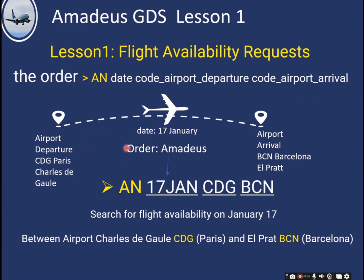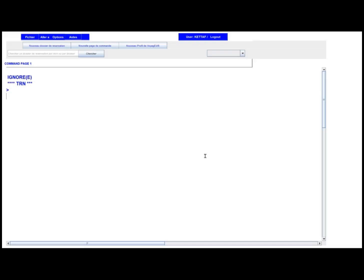Let's take an example. If we want to search for available flights on January 17th between Paris Charles de Gaulle Airport, IATA code CDG, to Barcelona, IATA code BCN, the command will be AN — which means request for availability — on January 17th, Charles de Gaulle to Barcelona. We will now do an example on the Amadeus system.